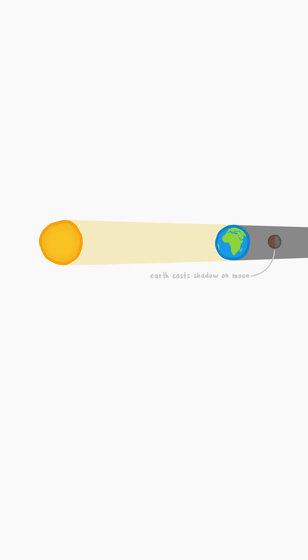When the moon passes into the Earth's shadow to create a lunar eclipse, the event can be seen from the entire nighttime half of the planet.